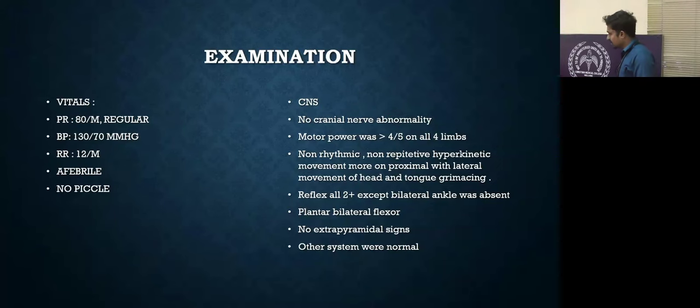On CNS examination, higher mental function was normal, no cranial nerve abnormality. Motor power was more than 4 by 5 in all four limbs with non-rhythmic, non-repetitive hyperkinetic movements, more on proximal areas, with lateral movement of head and tongue grimacing. Reflexes were all 2+, except bilateral ankle was absent, and plantar was bilateral flexor. No extrapyramidal signs, and other systems were within normal limits.